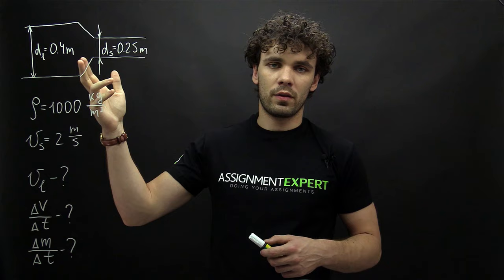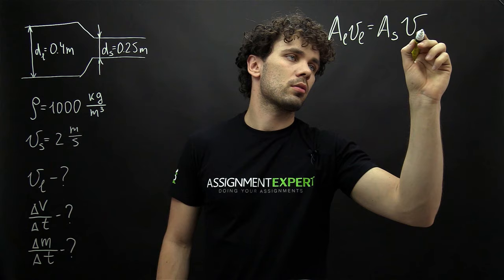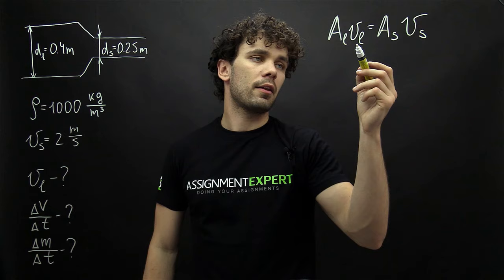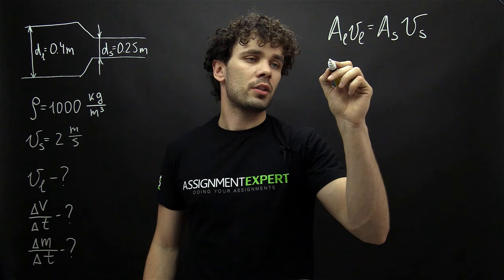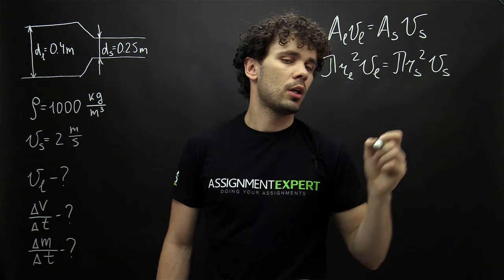First we need to find the speed in the larger side of this pipe, and we can find it from the continuity law: A_L times V_L equals A_S times V_S, where A_L and A_S are the cross-sections of the larger and smaller parts, and V_L, V_S are the flow speeds in those parts. The cross-section of a pipe is pi times R squared, so we have pi·R_L² times V_L equals pi·R_S² times V_S.